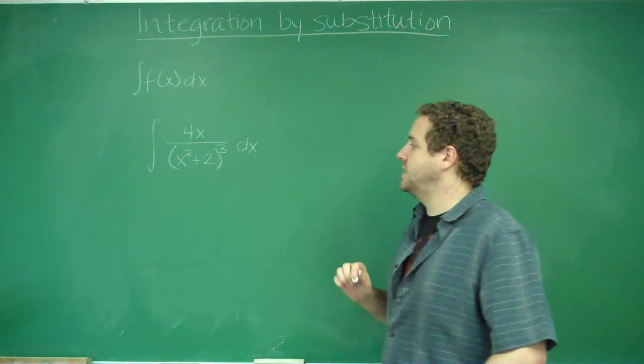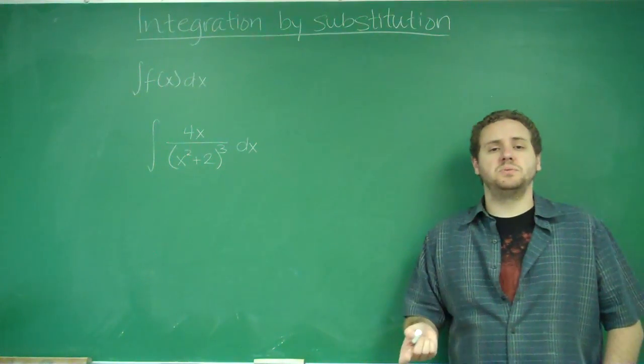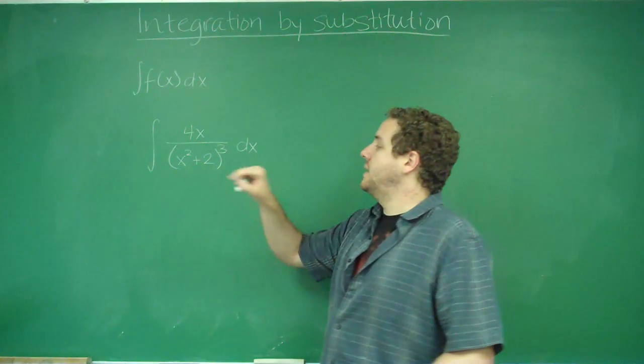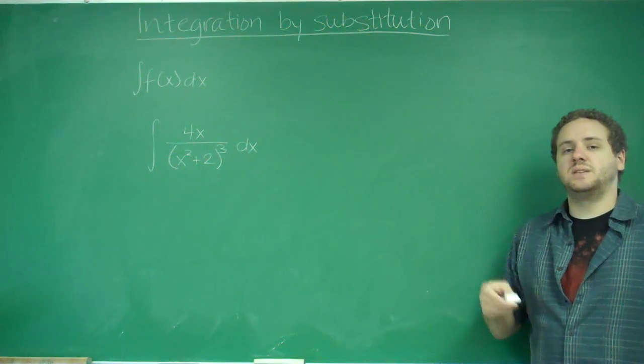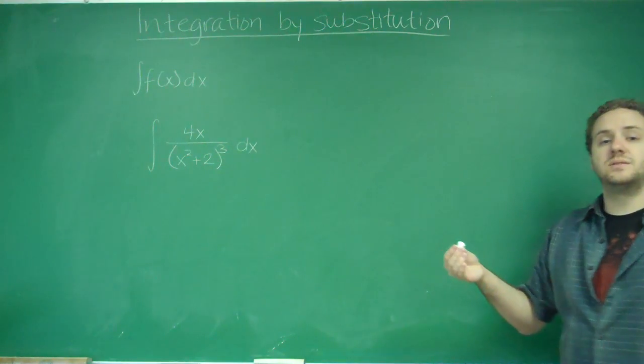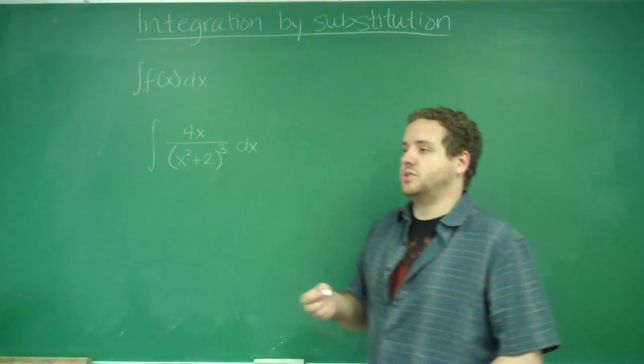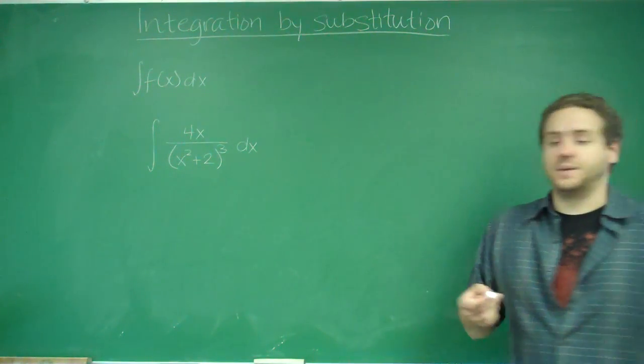What you do by substitution is you need to call part of this function its own variable. Usually use u, but it really doesn't matter. The strategy for choosing what you want to call u is if you see its derivative somewhere else in the function. There's a couple other things I'll get to about what's effective for choosing the best u to make the problem simplest.